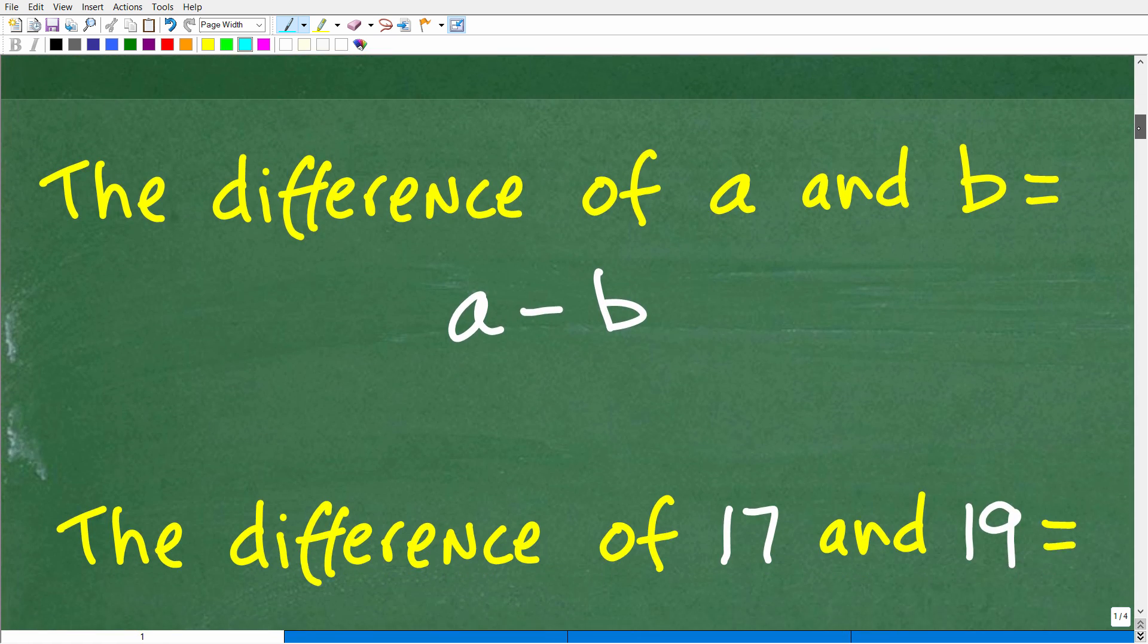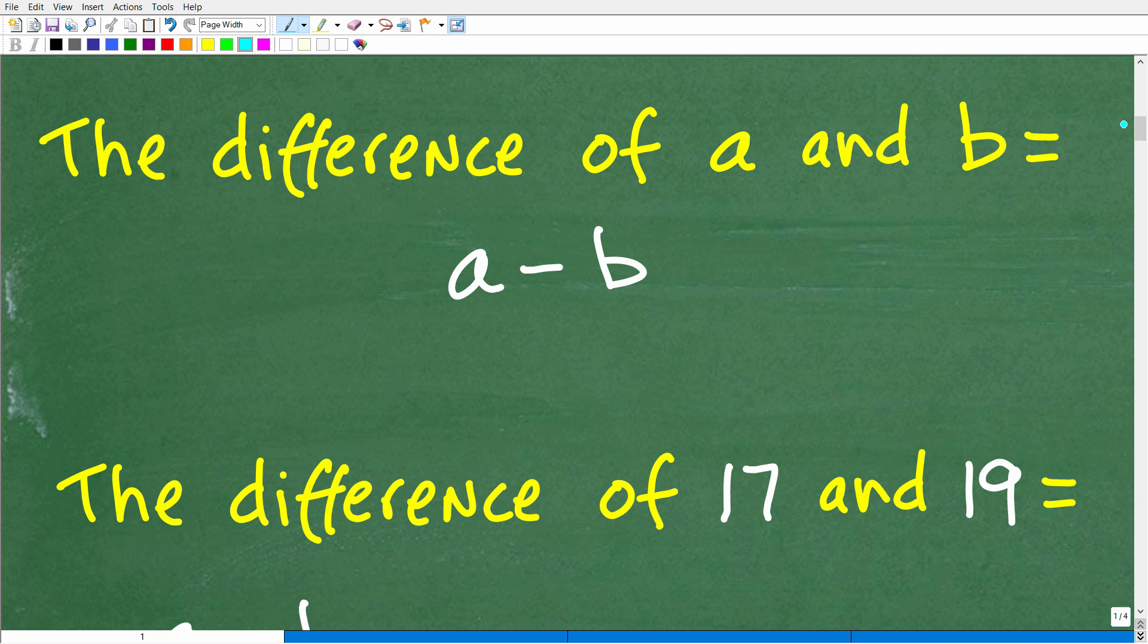Okay, so the difference of A and B, and A and B are two numbers, and look at the order of this sentence here. So it's the difference of A and B is equal to A minus B. So the number, the first number comes first, and the second number comes second. And these two numbers are separated by the subtraction operation.